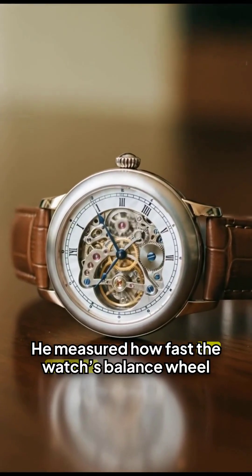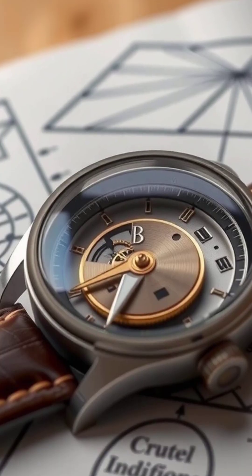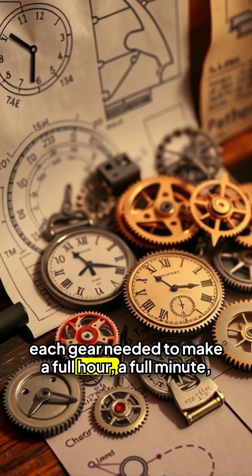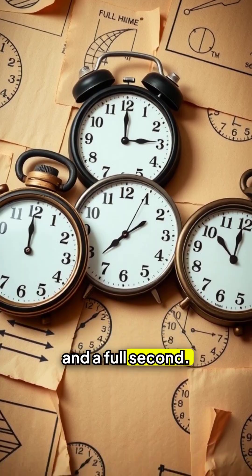He measured how fast the watch's balance wheel oscillated. Then he counted how many rotations each gear needed to make a full hour, a full minute, and a full second.